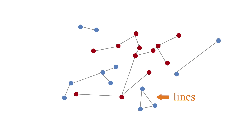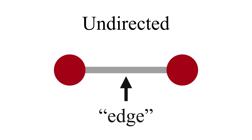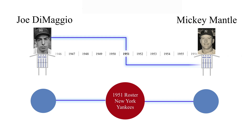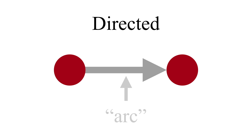Networks can also differ in terms of the lines. In undirected networks, the lines are called edges, because directionality is not a salient feature. For instance, Joe DiMaggio connected to Mickey Mantle through the Yankees — the direction of that tie isn't meaningful, so it's an undirected network and the link is an edge. In a directed network, the link is referred to as an arc — it has an arrow. In these cases, the directionality of the tie, and in particular the reciprocity of the tie, is an important feature of the network.